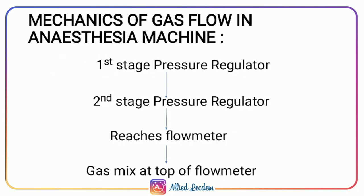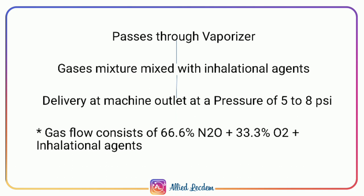The mechanics of gas flow in the anesthesia machine: gas passes through the first stage pressure regulator, then the second stage pressure regulator, then reaches the flowmeter. Gases mix at the top of the flowmeter, then pass through the vaporizer where they are mixed with inhalational agents, ensuring delivery at the machine outlet at a pressure of 5 to 8 psi. The gas flow consists of 66.6% nitrous oxide and 33.3% oxygen plus inhalational agents, providing 100% gas supply.